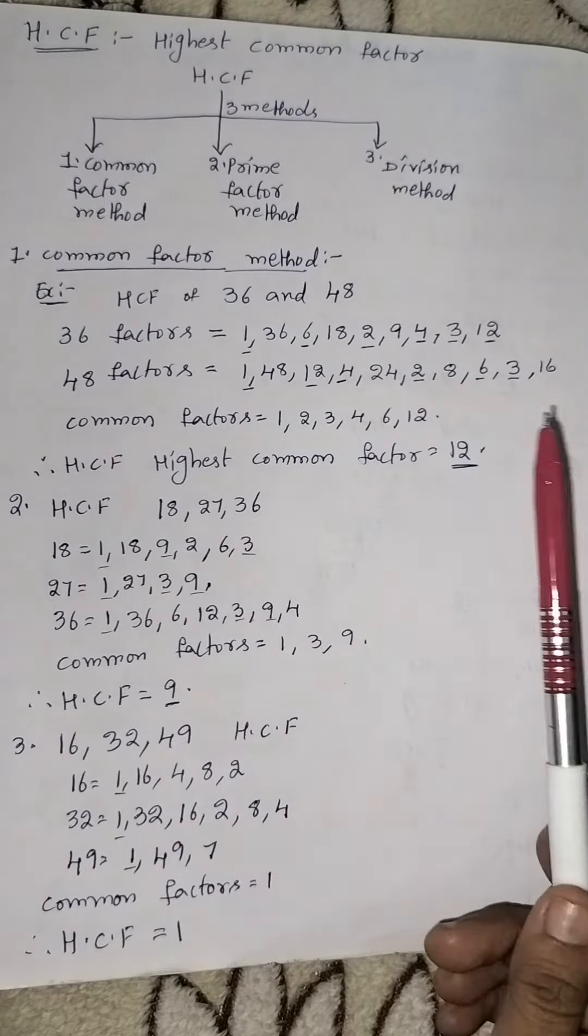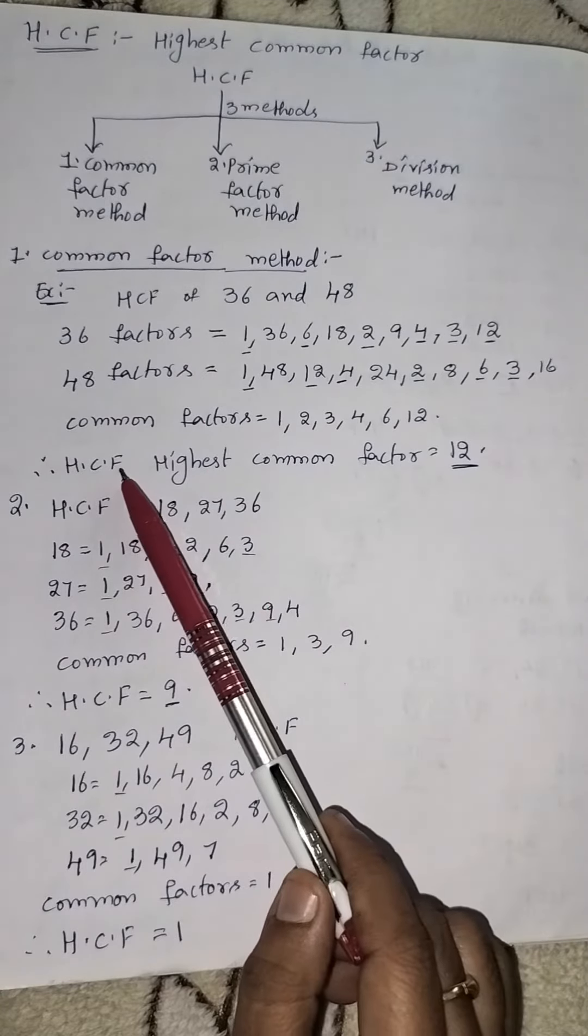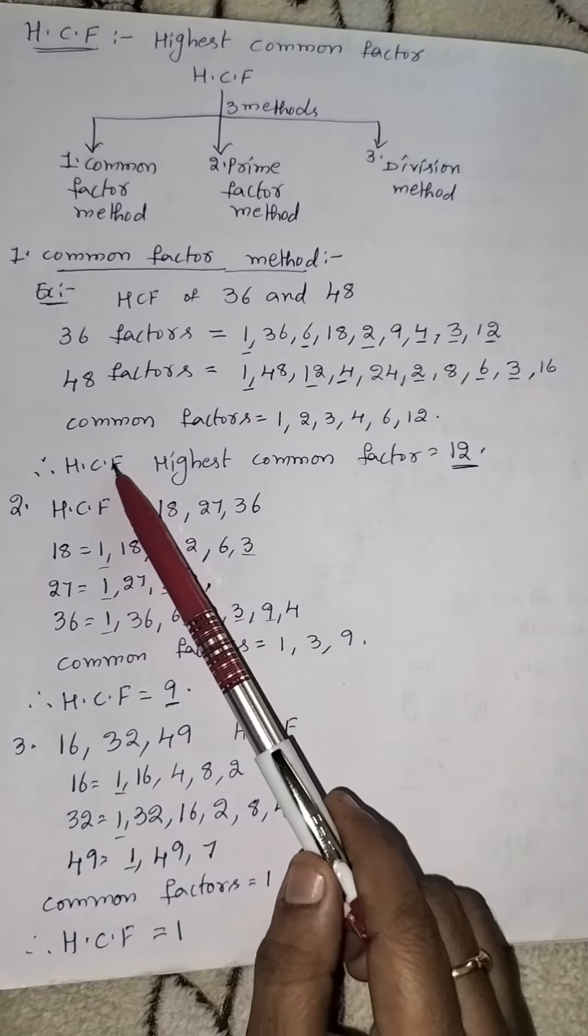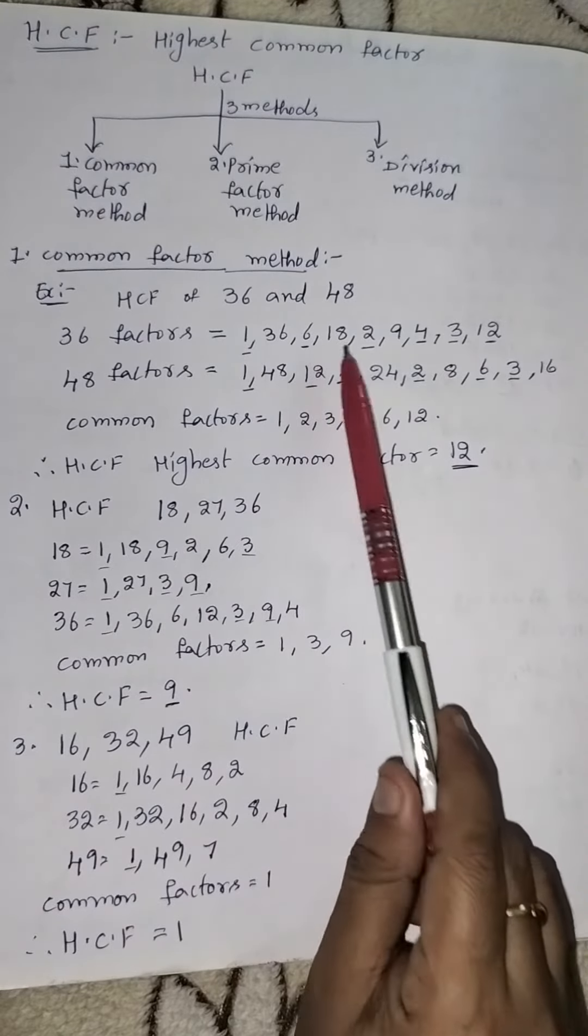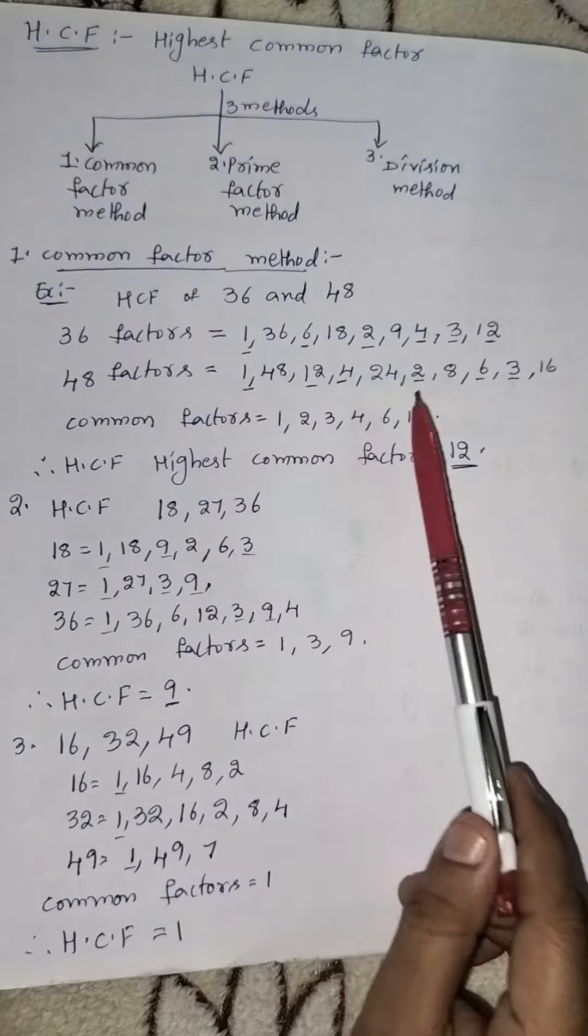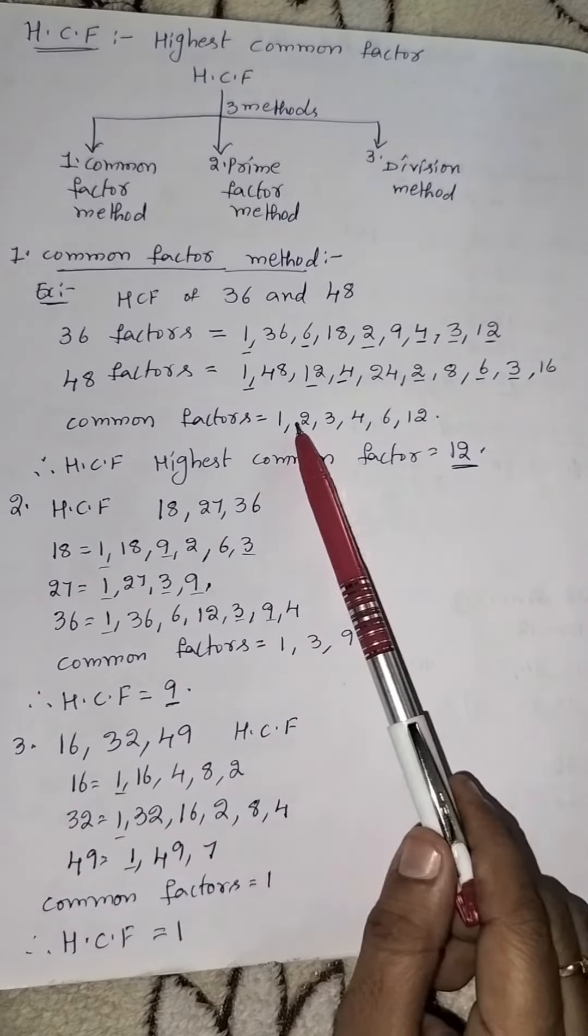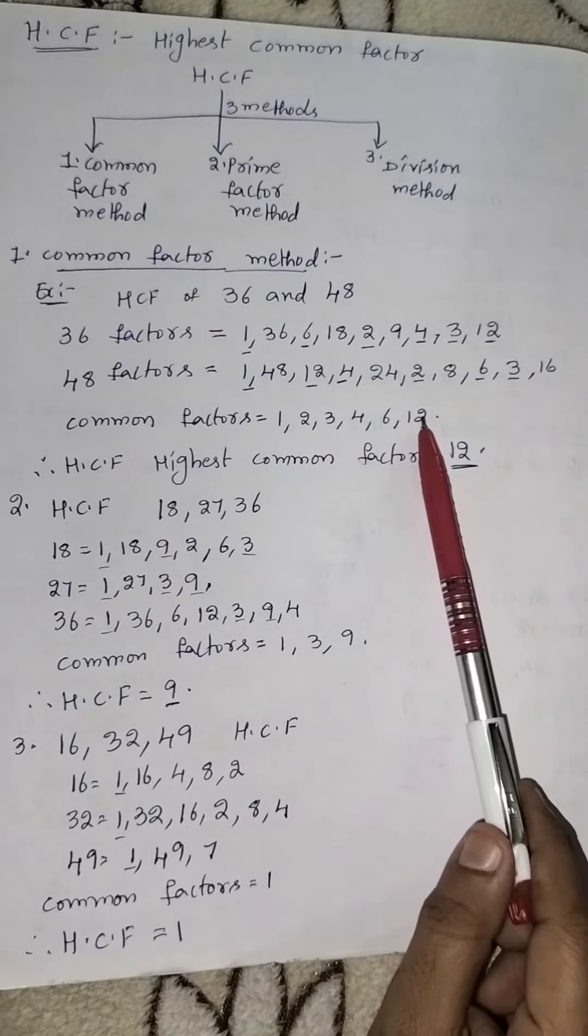So this is the very simple trick. HCF means first of all we write the factors of the numbers, after then we write the common factor, and in these we write the highest common number. So highest common factor is 12.